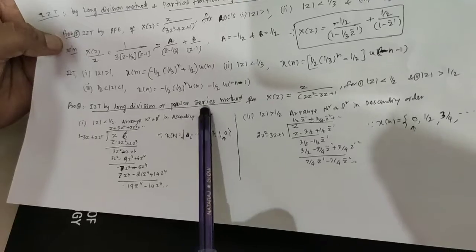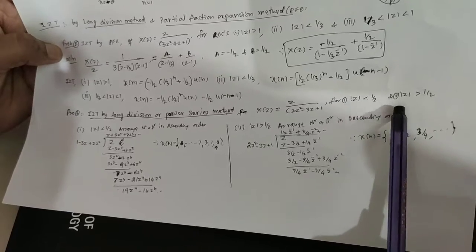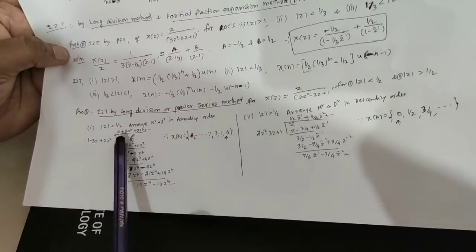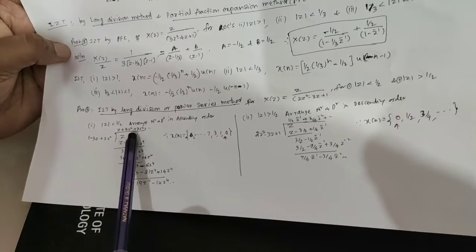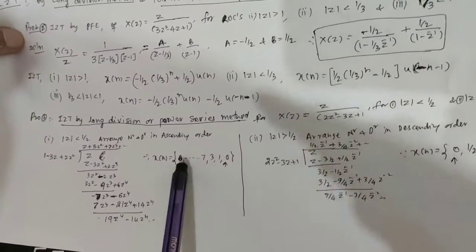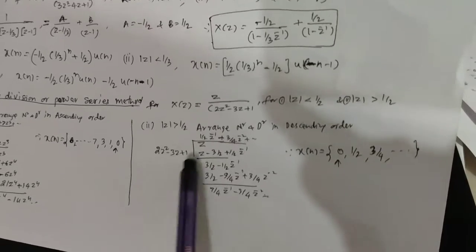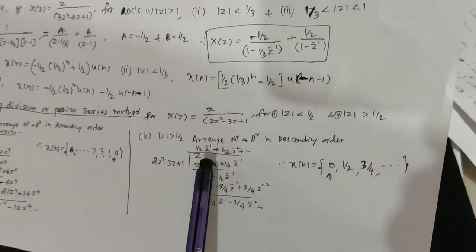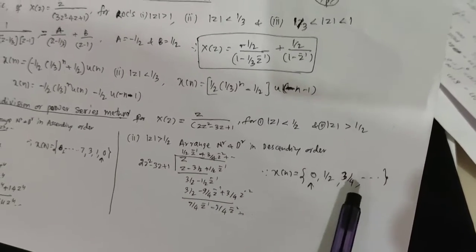Next, inverse Z-transform by long division or power series method. The given equation has conditions z less than 2 and z greater than 2. For z less than 2, arrange numerator and denominator in ascending order of powers: X of n is given by z divided by 1 minus 3z plus 2z cubed. Solving gives z plus 3z squared plus 7z cubed, so x of n is the left-sided sequence: 0, 1, 3, 7, and so on. For z greater than 1 by 2, arranging in descending order gives z divided by 2z squared minus 3z plus 1. Dividing gives 1 by 2 z raised to minus 1 plus 3 by 4 z raised to minus 2, so x of n equals 0, 1 by 2, 3 by 4, and so on.